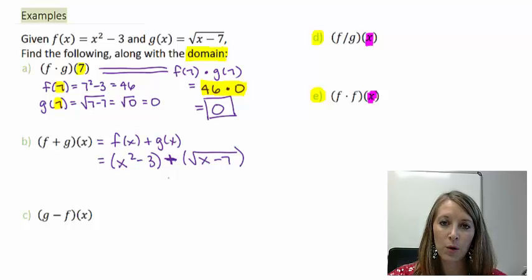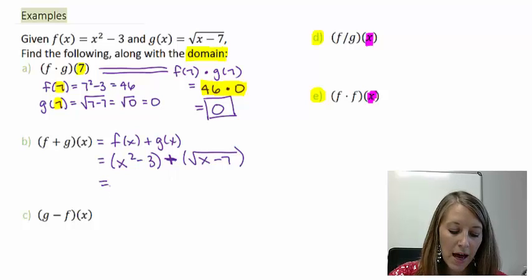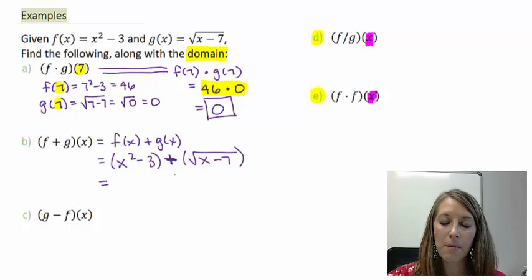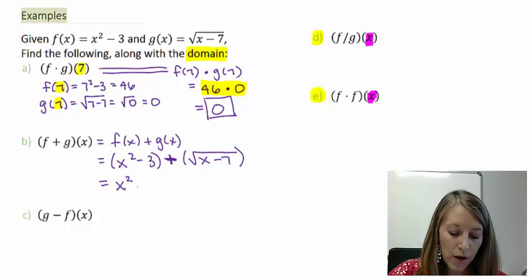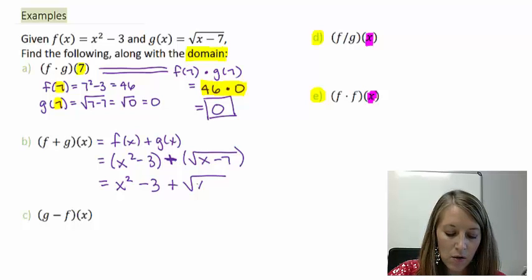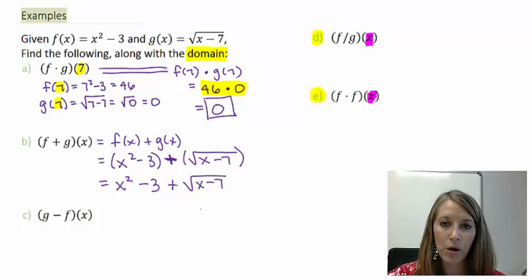So I suggest that you always substitute these in in parentheses, and then if you don't need them, you can go ahead and get rid of them. So to simplify this, I can drop my parentheses and combine any like terms if I have any, which I don't because I have x squared, I have minus 3, and then I have a square root.